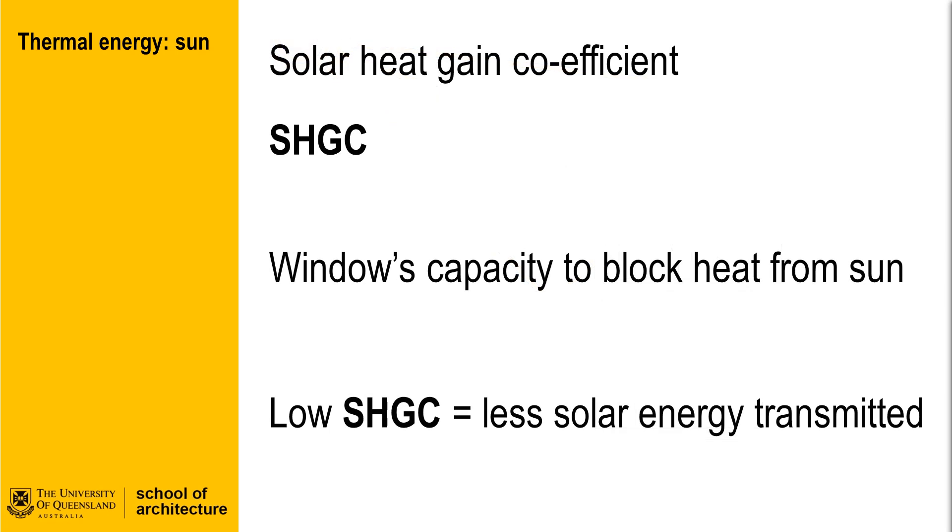Manufacturers of glazing assemblies will often use what is commonly termed a solar heat gain coefficient to describe the performance of their windows. Usually, a lower solar heat gain coefficient translates to less solar energy transmitted through a window assembly.